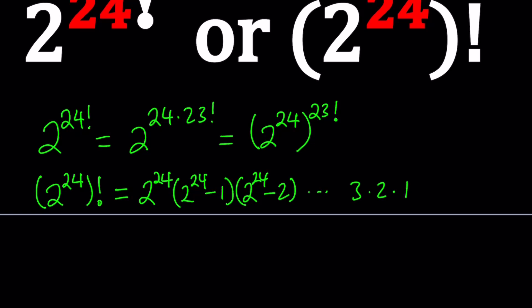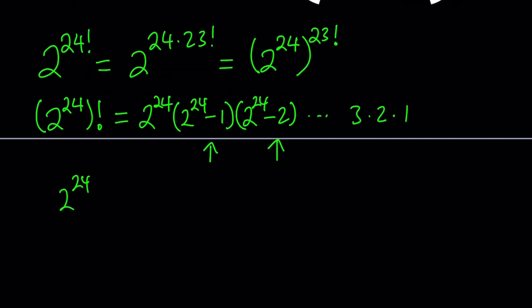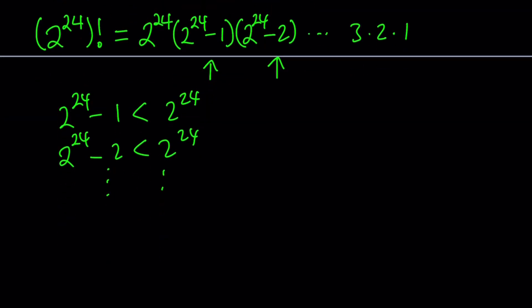Obviously we have a very large number, so 3, 2, 1 are going to be in the product. I'm going to be looking at these factors. 2 to the power 24 minus 1 is obviously less than 2 to the power 24. 2 to the power 24 minus 2 is definitely less than that, and they get smaller and smaller, finally reaching 2 and 1. So when we multiply these together — this product goes all the way down to 1 — we're going to have 2 to the power 24 factors.